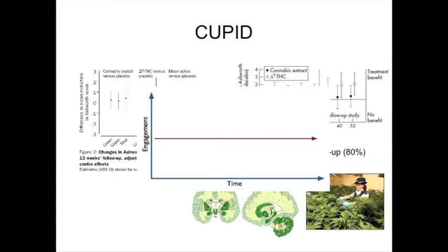The CUPID trial — the cannabinoid trial — hasn't been published yet but was announced last year by John Zaychak. This is the phase 3 trial to find out whether taking artificial cannabinoid tablets could be neuroprotective, in a mixed primary and secondary progressive group. The runner and rider was the cannabinoid against placebo; the course was three years; the outcome was disability. It had no effect — it flatlined. This was a big study around the UK of about 500 patients. One reason may be that patients were not changing fast enough — if you're not changing fast enough, you can't show an effect. That was a lesson learned.